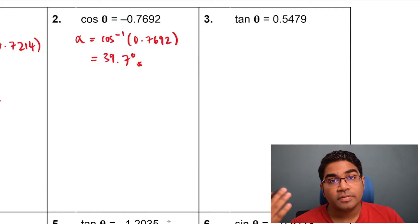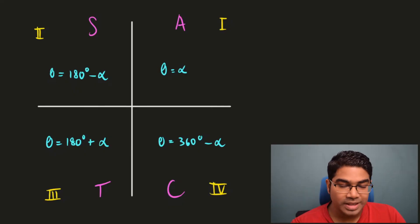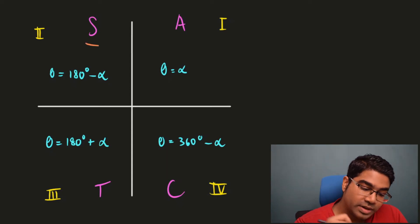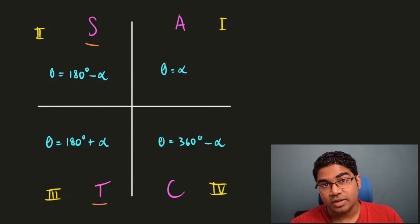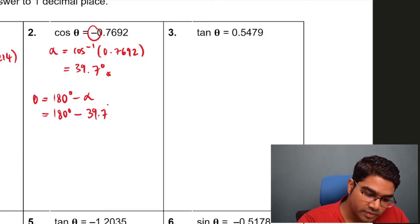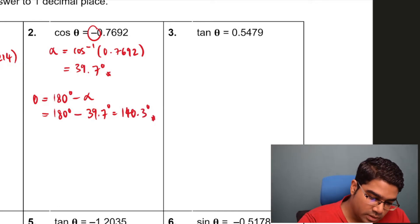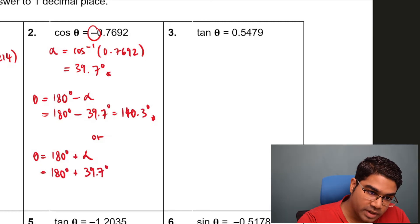Now we have to check which quadrant. The cosine function is negative, so it lies in either quadrant 2 where only sine is positive, or quadrant 3 where only tangent is positive. For quadrant 2, theta equals 180 degrees minus alpha, so 180 minus 39.7 degrees, giving 140.3 degrees. For quadrant 3, theta equals 180 degrees plus alpha, which is 180 plus 39.7 degrees, giving 219.7 degrees.